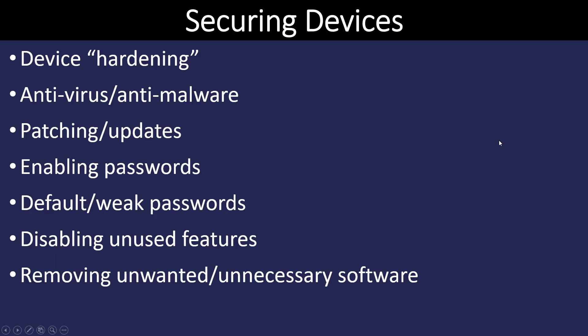There are a number of things we can do to secure our devices, starting with something known as device hardening, which is a set of policies that make computers and network appliances more secure. Some options for hardening include a screen lock or a password change and generally changing some of the default settings, both on your computer and your networking devices, to ensure that someone off the street can't get into them by using well-publicized information.